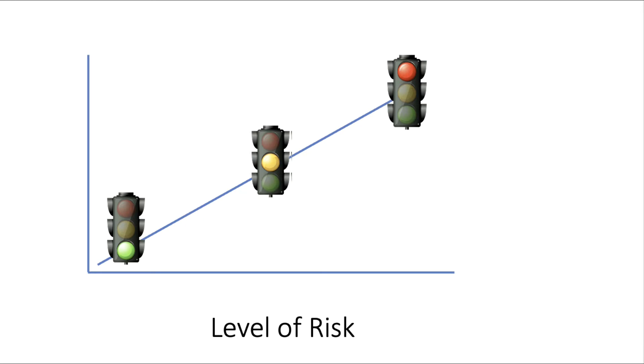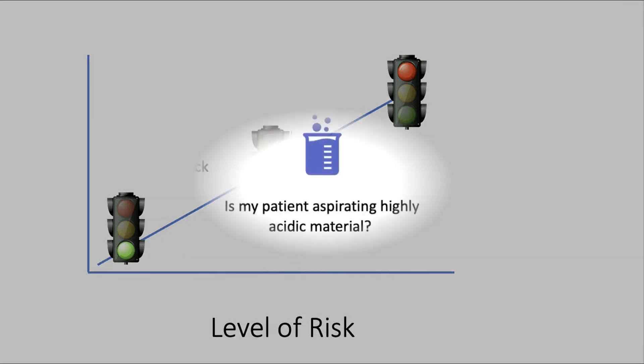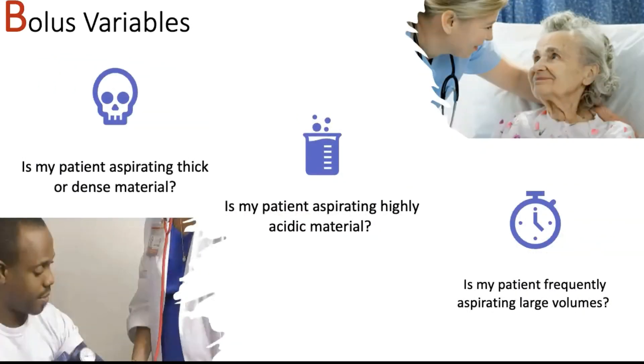Using the bolus framework, we are going to assess risk by using stoplights, where green implies a very low risk and red implies a very high risk of an adverse event.